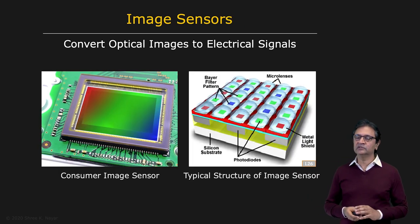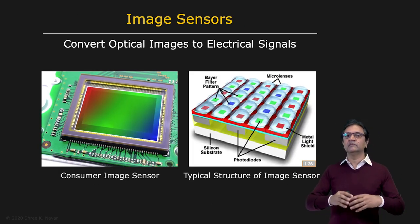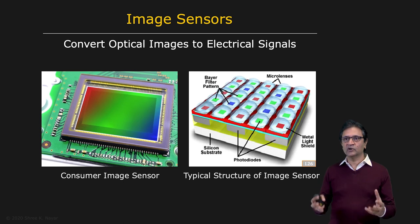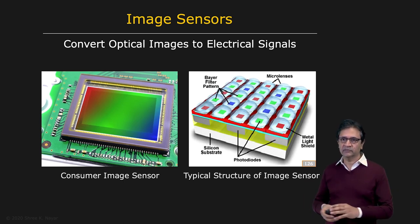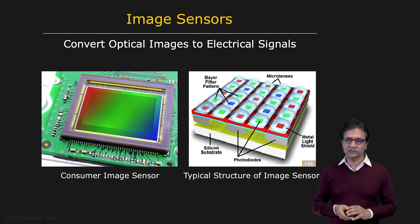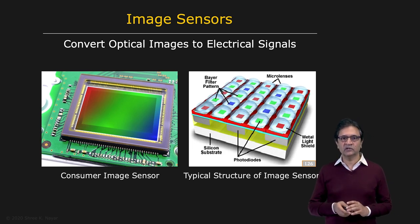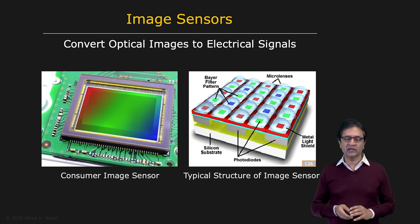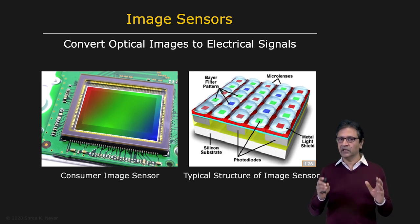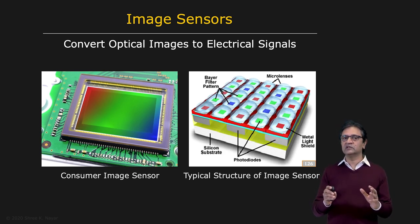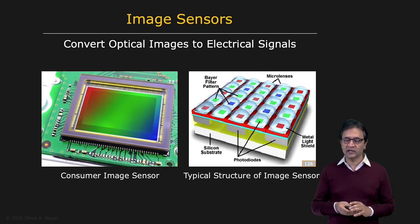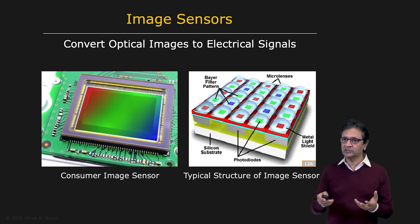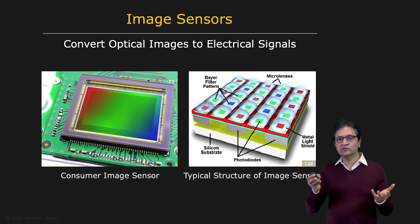Once we have an optical image, we think about how to map this image to record it and create a digital image. This is done using image sensors. Image sensor technology has made tremendous advances in the last two decades — in fact, that is one of the main reasons we are witnessing this digital imaging revolution. So we look at different types of image sensors and how they actually convert optical images to digital images.